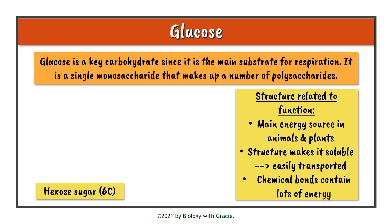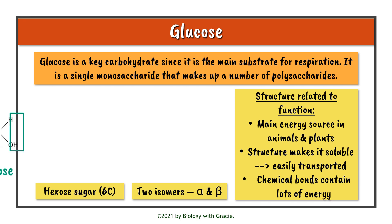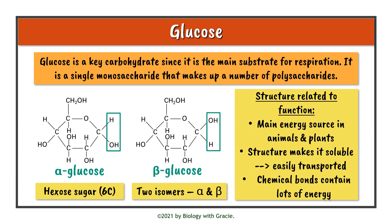As mentioned, glucose is a hexose sugar with six carbon atoms, and there are actually two isomers of glucose: alpha glucose and beta glucose. The structures of these two isomers are very similar but there is a slight difference. For alpha glucose, the hydrogen group is above the ring and the hydroxyl group is below at the first carbon. For beta glucose, the hydroxyl group is above and the hydrogen is below. This slight difference really changes the overall structure of the glucose molecule, and you need to remember the differences in these structures.